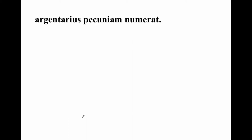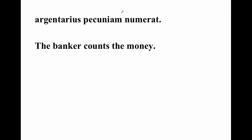Argentarius Pecuniam numerat — the banker counts the money. Here again, this is our accusative object. Pecuniam is accusative because it's the direct object. Argentarius is nominative here because it's the subject of the verb.